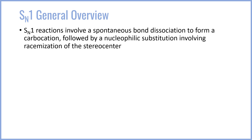The SN1 reaction follows a consistent pathway. That is to say, the SN1 reaction first involves a spontaneous bond dissociation from the carbon to the leaving group, followed by nucleophilic substitution onto the resulting cation that happens once the bond is ruptured.